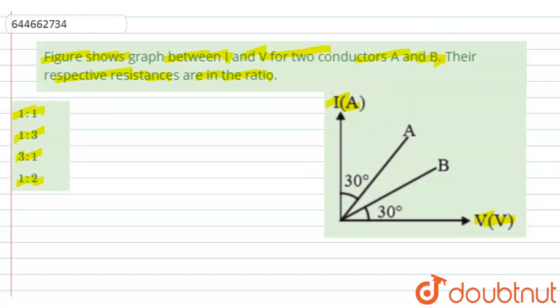Now, see, according to Ohm's law, we know that voltage is proportional to current. And after removing the proportionality sign, we get V equals to IR.